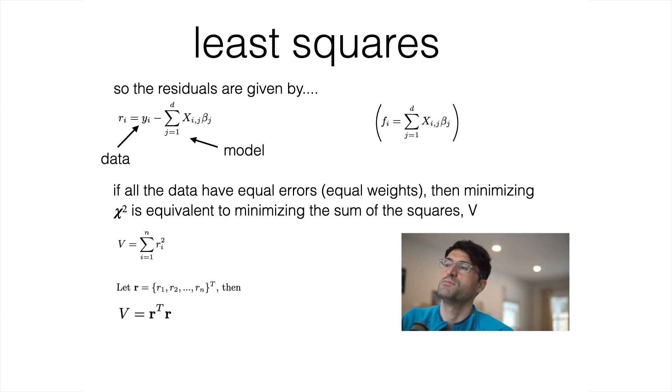I'm going to switch this out and move into linear algebra notation so we can re-express this V as the transpose of r dot r. That is really just the same as saying the sum of r_i squared. Our objective is to find the choice of beta which minimizes this V term. If you're trying to find the minimum of a function you take the derivative with respect to beta, setting that to zero and then solving for beta.